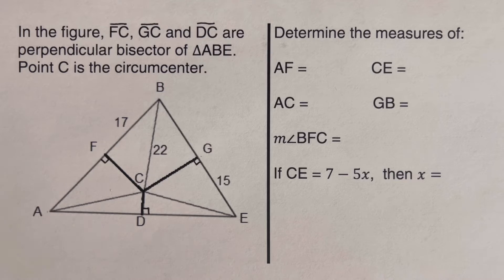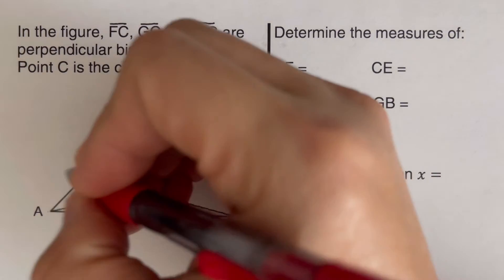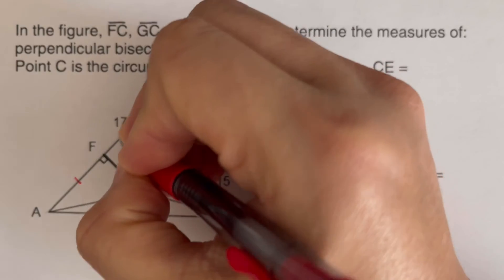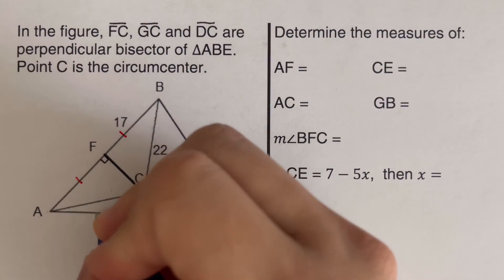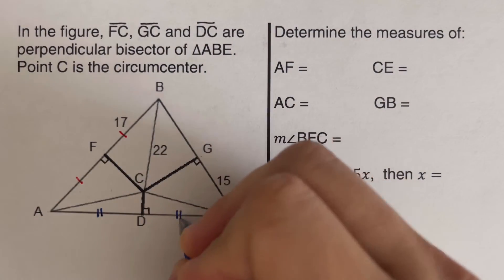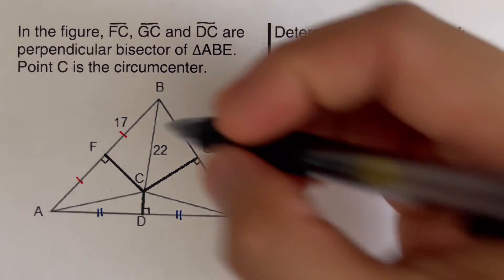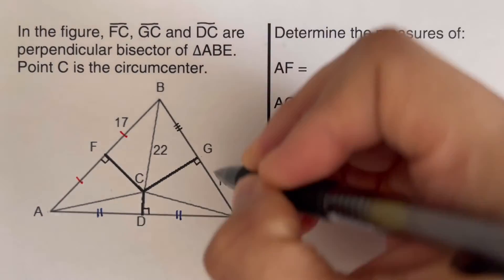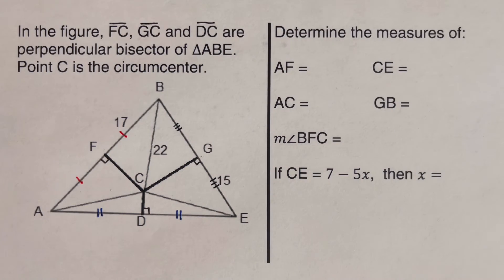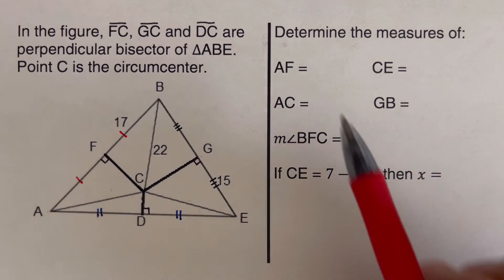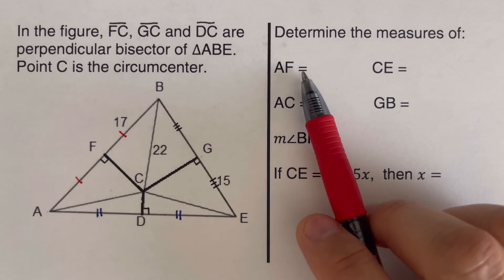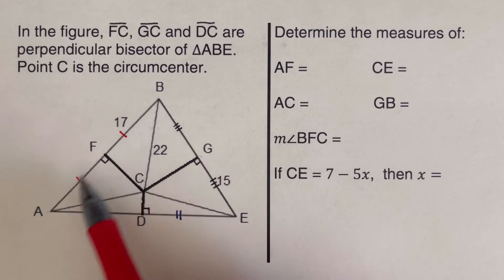Given that condition, since these are perpendicular bisectors, we can go ahead and label these to be equal to each other. So these two would also be congruent because it was bisected, and these two would also be congruent as it was bisected. So then we can go ahead and fill this in. Our AF would be congruent to that of FB. So this is 17.